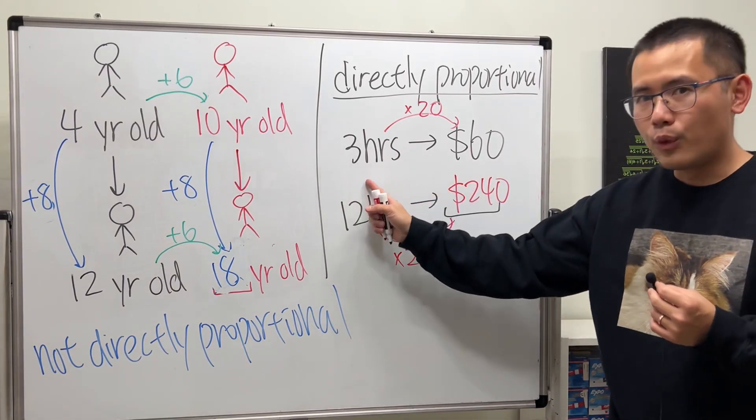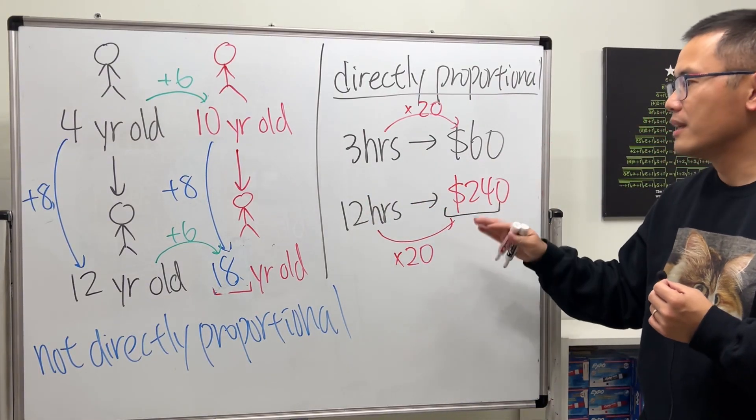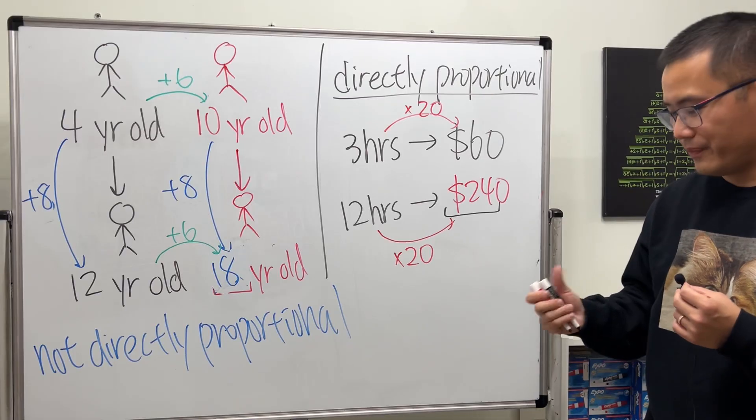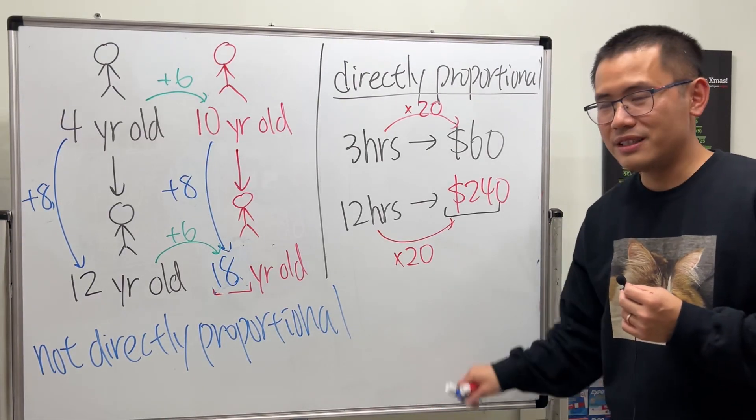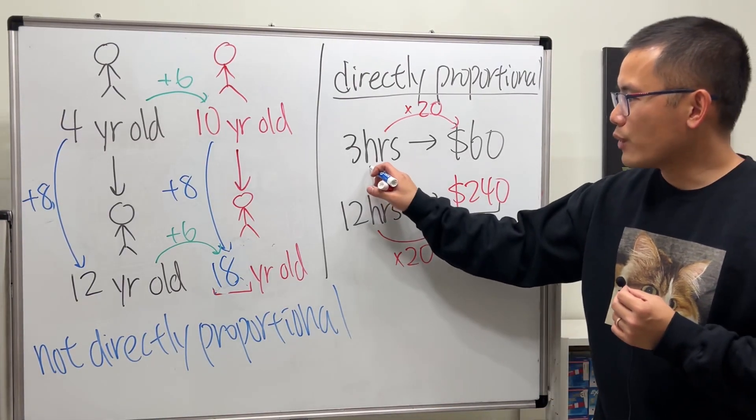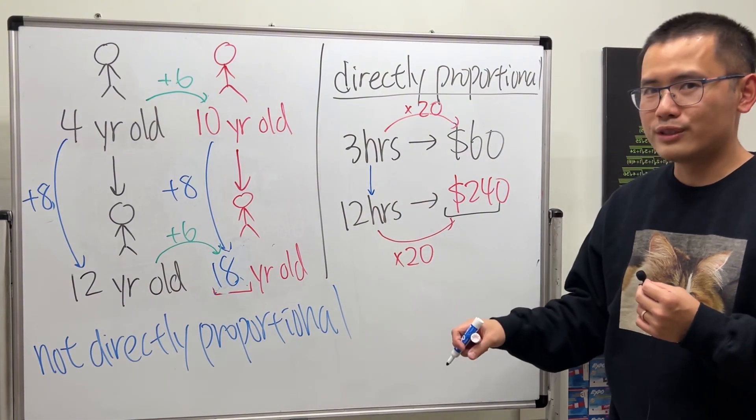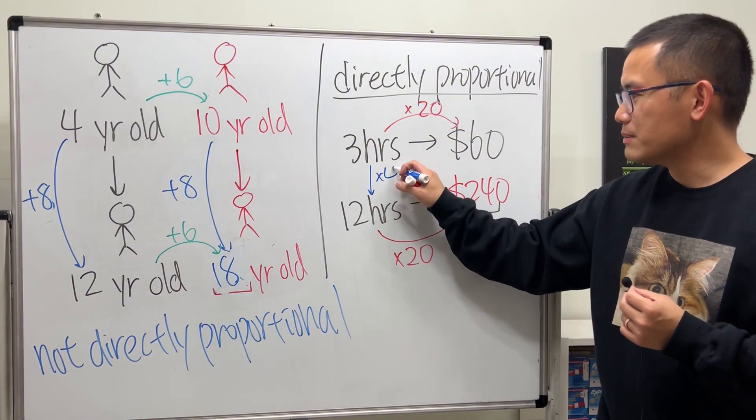So as you can see, hours versus how much you make, they are directly proportional. And in fact, you can also look at it this way: going from three hours to 12 hours, that's just four times as much, right?